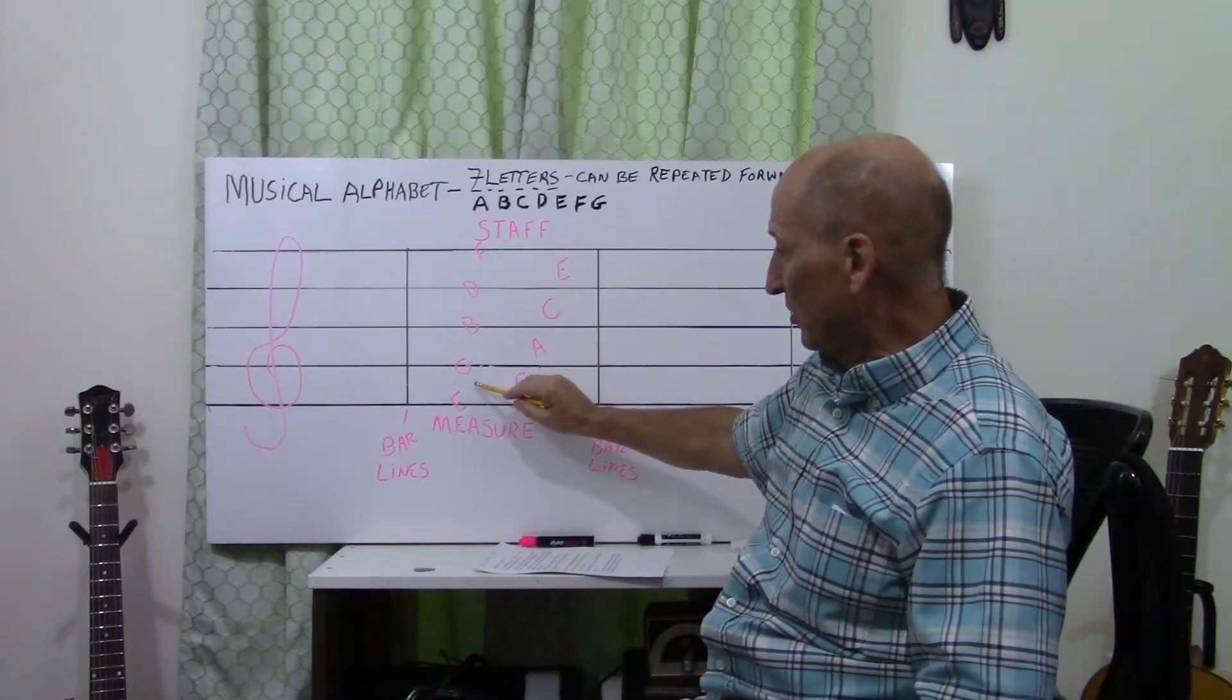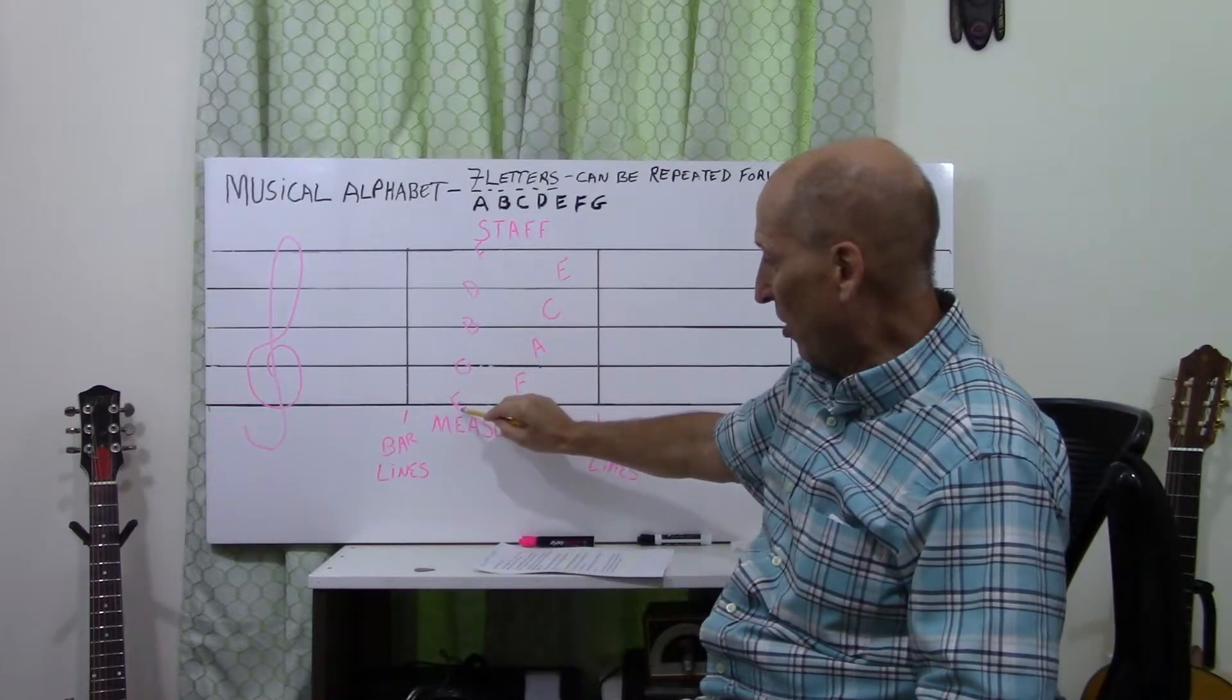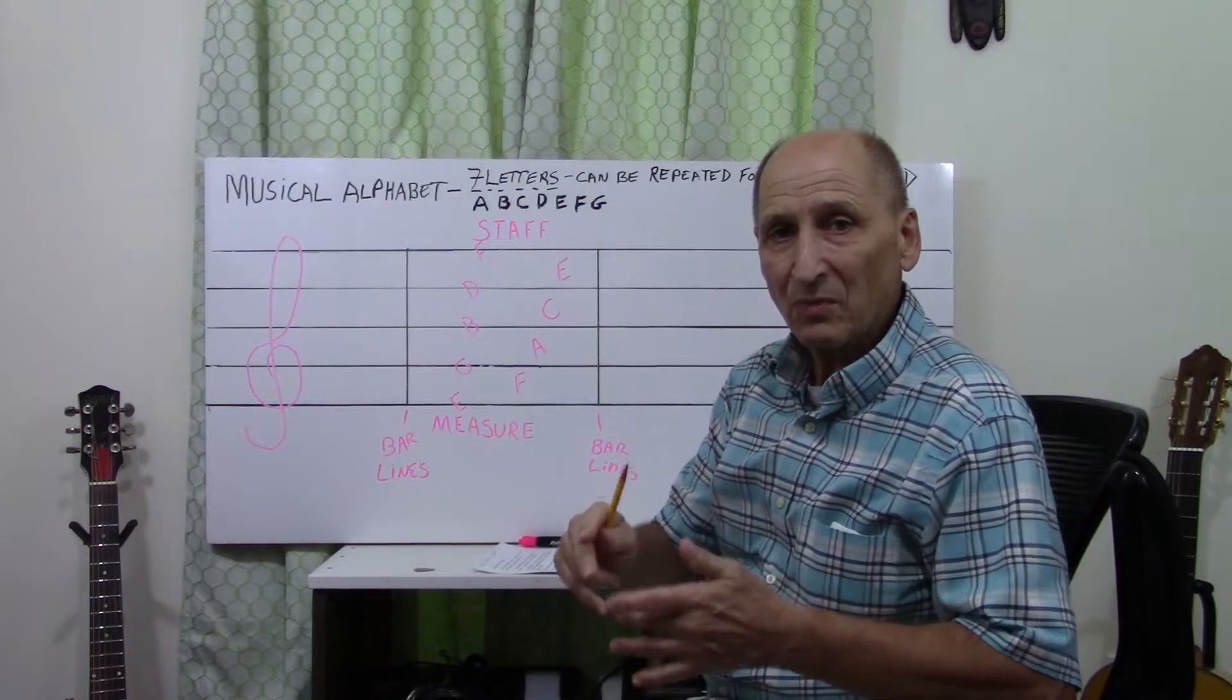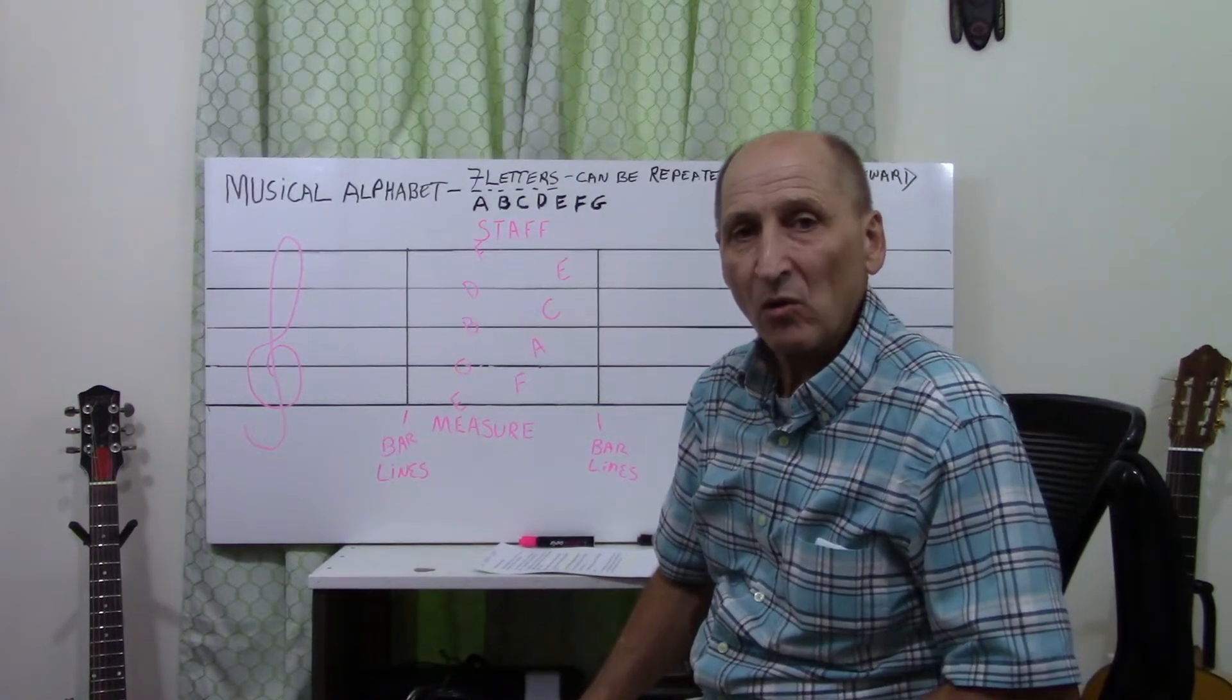Going backwards, G, space, F, line E. Point is, line, space, line, space is alphabetical order.